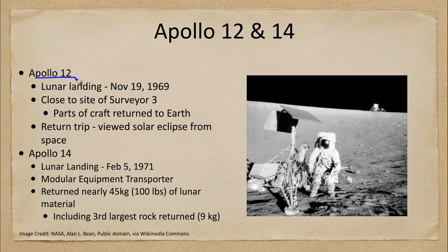Apollo 12 was the second lunar landing and that occurred in November of 1969. It was actually close to the site of the Surveyor 3 spacecraft, which we talked about previously. You can see that in the image here where in the foreground we see Surveyor 3 where it landed on the moon a couple of years before, and off in the distance we can see the lunar module.